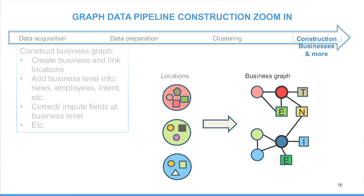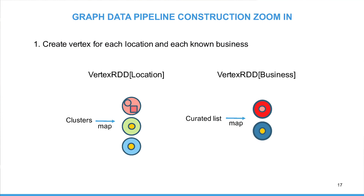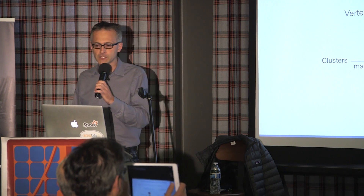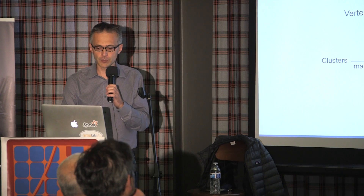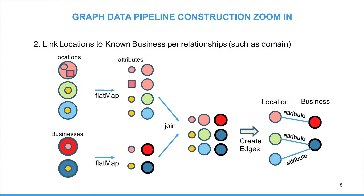Now I'll zoom in on how we go from the left side to the right side of the pipeline. The first step is to generate location vertices based on the cluster — we have groups of records coming together and map each cluster to a vertex location, limited to the attributes we need for linking locations. Our pipeline features an optimization for non-large businesses using a curated list including key attributes such as name, website, and additional information, where every entry maps to a business vertex. This improves performance and accuracy of our graph.